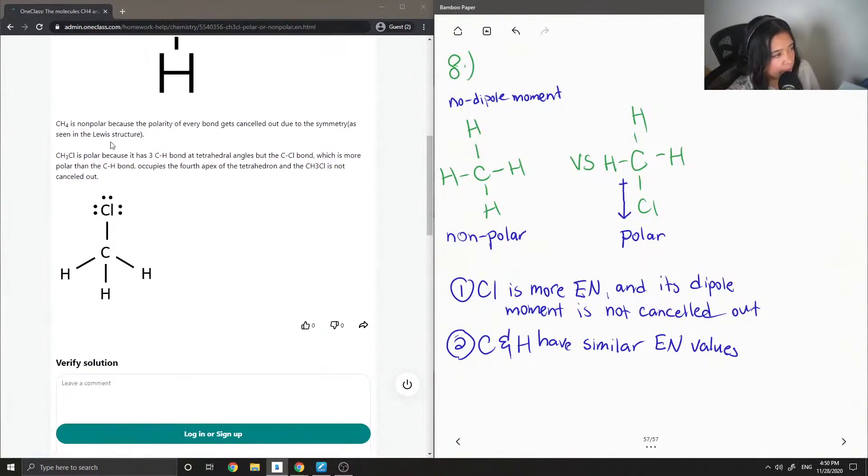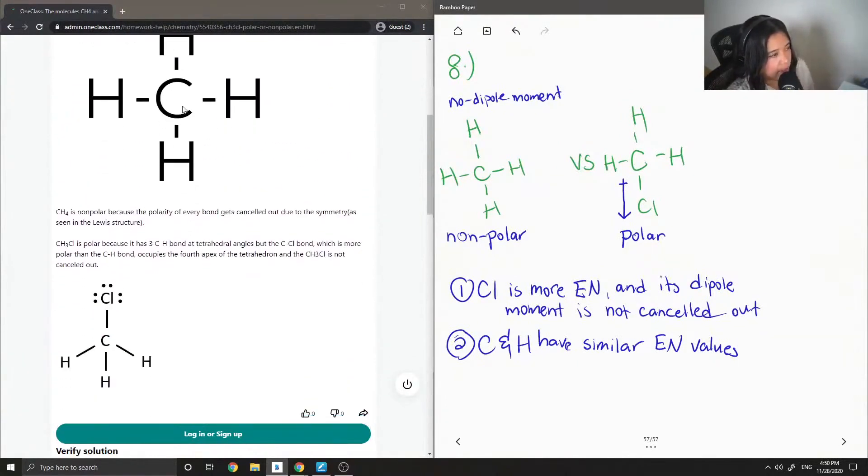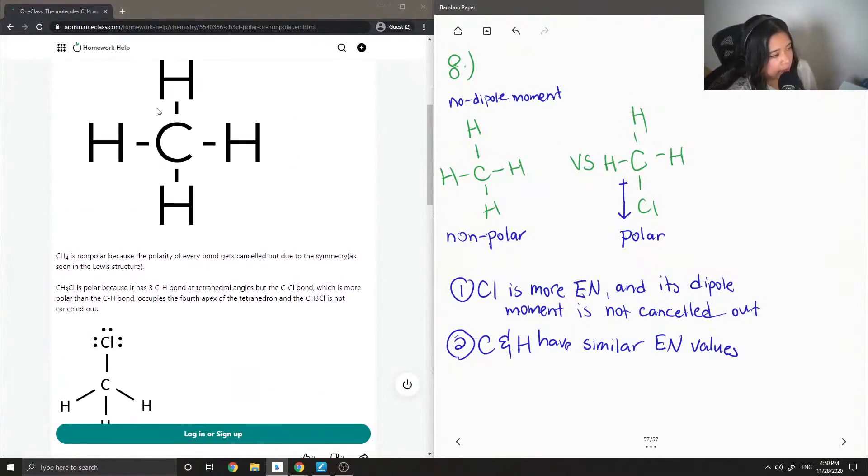CH4 is non-polar because the polarity of every bond gets cancelled out due to the symmetry, as seen in the Lewis structure. You can see that this molecule is entirely symmetrical.